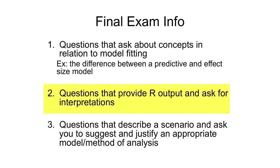It could also be that you're given simple regression output and then output for when a second x variable is added to the model, and the question asks: based on this output, do you think this second x variable should be kept in the model? Is it a confounder — is there a large change in the primary x coefficient? And if not, is it another predictor or collinear with the primary x? If there's a decrease in the standard error associated with beta 1, this suggests it's a predictor. But if there's a large increase in the standard error, this suggests the second variable is collinear with the primary x variable.